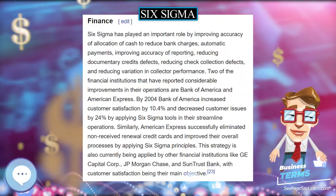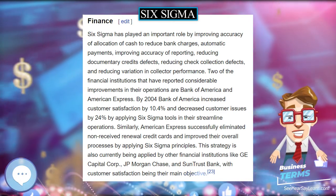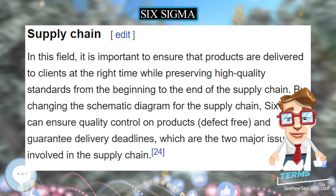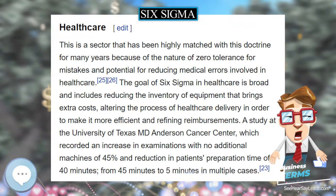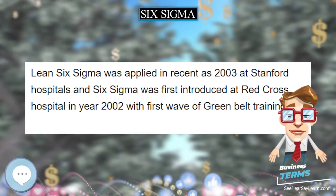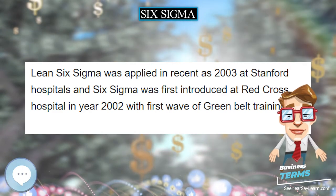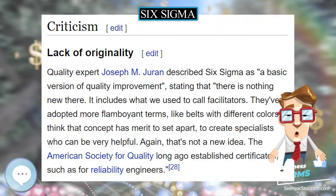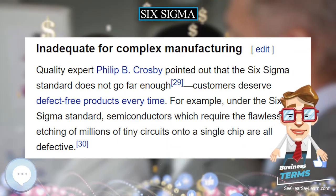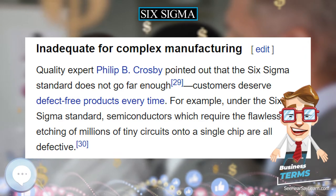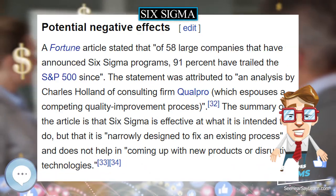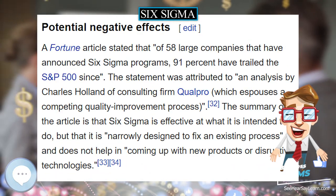Lean Management and Six Sigma are two concepts which share similar methodologies. Both programs are Japanese-influenced, but they are two different programs. Lean Management is focused on eliminating waste using standardized tools targeting organizational efficiencies, while Six Sigma's focus is on eliminating defects and reducing variation. Both systems are driven by data, though Six Sigma is much more dependent on accurate data.